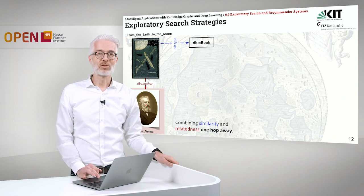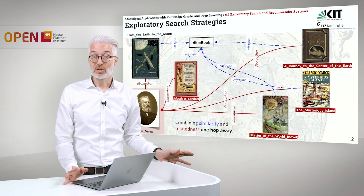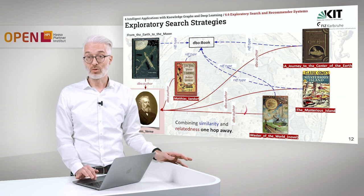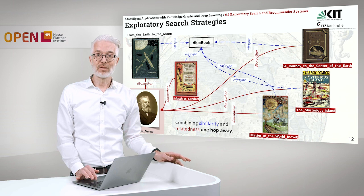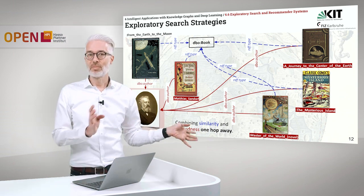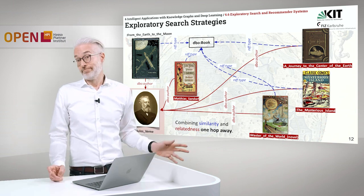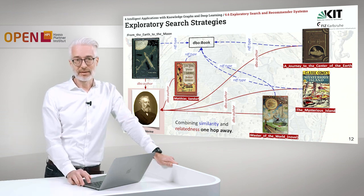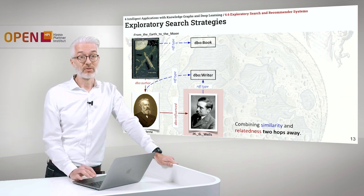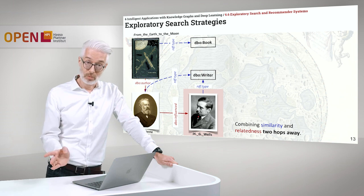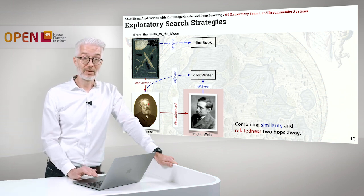I want to read something a bit different but nevertheless also similar. Going one hop away via relatedness, I end up at Jules Verne. Then one more hop using the same technique — looking for books directly related to the author — I find all other books of Jules Verne: besides 'A Journey to the Center of the Earth,' also 'The Mysterious Island' or 'Matthias Sandorf,' which are a bit more similar but by the same author. Maybe you've read enough Jules Verne, so let's go to another author — but of course the authors should be related somehow.